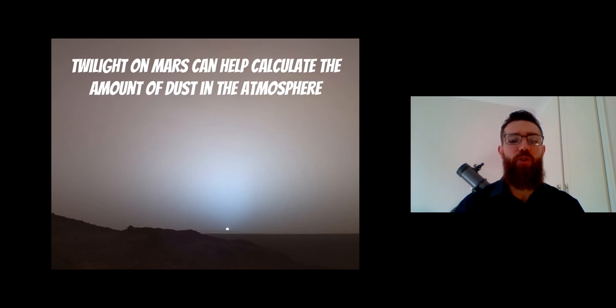The interesting thing is you can work out the amount of dust in the atmosphere by observing the twilight on the planet. We can work out just how much dust is there just by what's happening with the twilight periods.